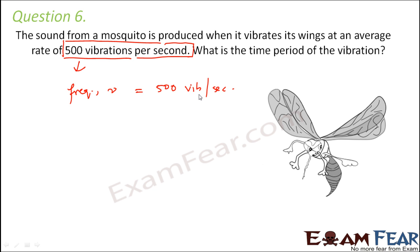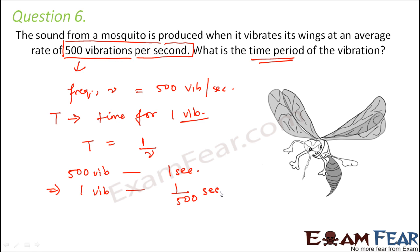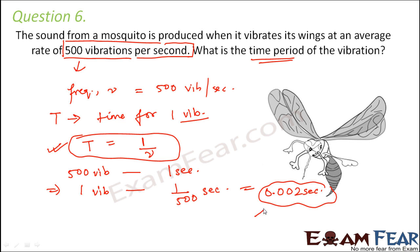We know how many oscillations are taking place in one second. We have to calculate the time period, which is the time for one oscillation or one vibration. Time period T equals 1 by nu. For 500 vibrations it takes one second, so for one vibration it takes 1 by 500 seconds. So it comes out to be 0.002 seconds. This is the time period of vibration.